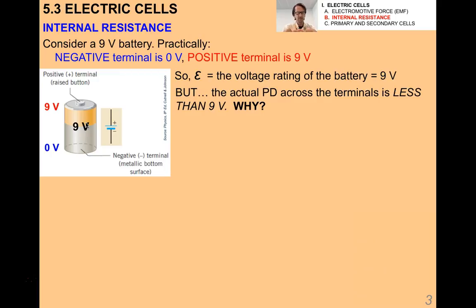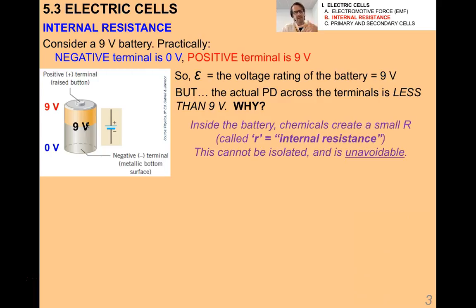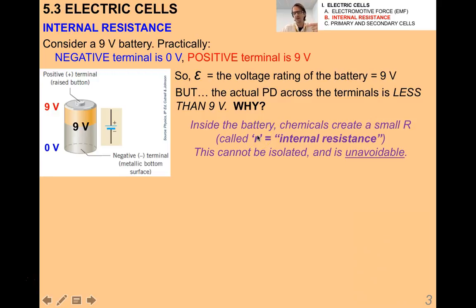If the EMF is the voltage rating of the battery — say 9 volts — but then we put a voltmeter across the terminals, the actual potential difference would be less than 9 volts. Generally speaking the potential difference would actually be less. Why? It's because inside the battery there are chemicals that create a small resistance that can't be isolated and is unavoidable — this is called internal resistance, denoted by lowercase r.